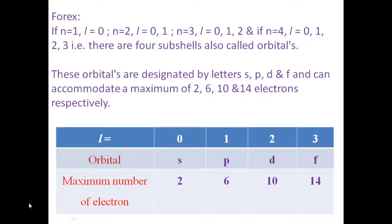For n=2, L can have two values: 0 and 1. When L is 0, the orbital is the S-orbital. When the value of L is 1, the orbital is the P-orbital and the maximum number of electrons is 6, corresponding to Px, Py, and Pz. That is why there are 6 electrons.